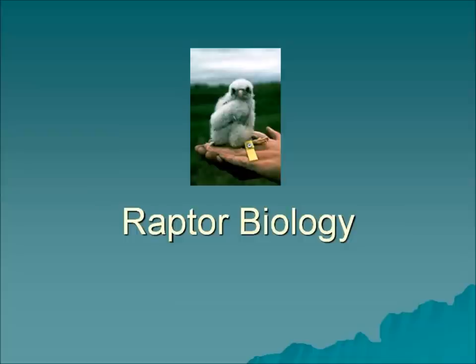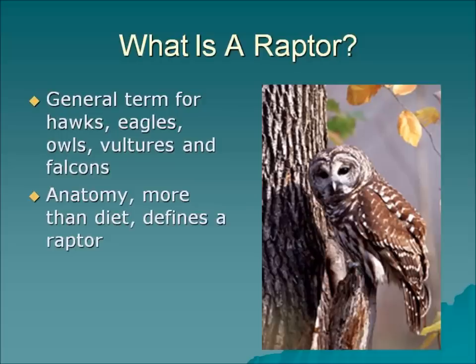Welcome everybody. We're going to find out some really amazing things about our birds of prey, or raptors. The raptor family refers to our hawks and eagles, owls, falcons, and vultures. Really it's the anatomy of the birds more than the diet that defines a raptor, though most people think of them as birds of prey because they eat other animals — more of a diet definition.